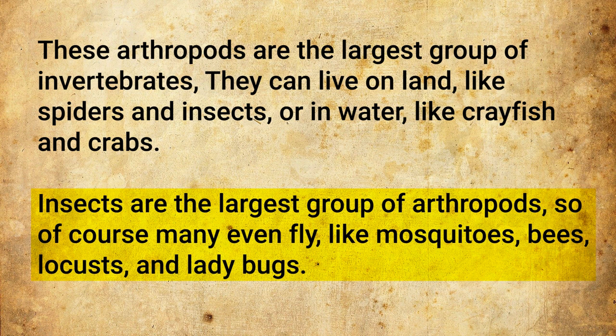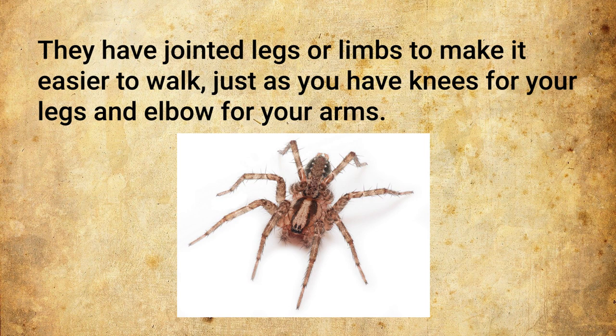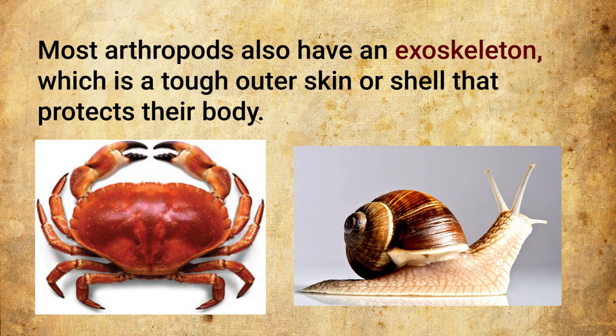Insects are the largest group of arthropods, and many even fly, like mosquitoes, bees, locusts and ladybugs. They have jointed legs or limbs to make it easier to walk, just as you and I have knees for our legs and elbows for our arms. Most arthropods also have an exoskeleton — a tough outer skin or shell that protects their body.